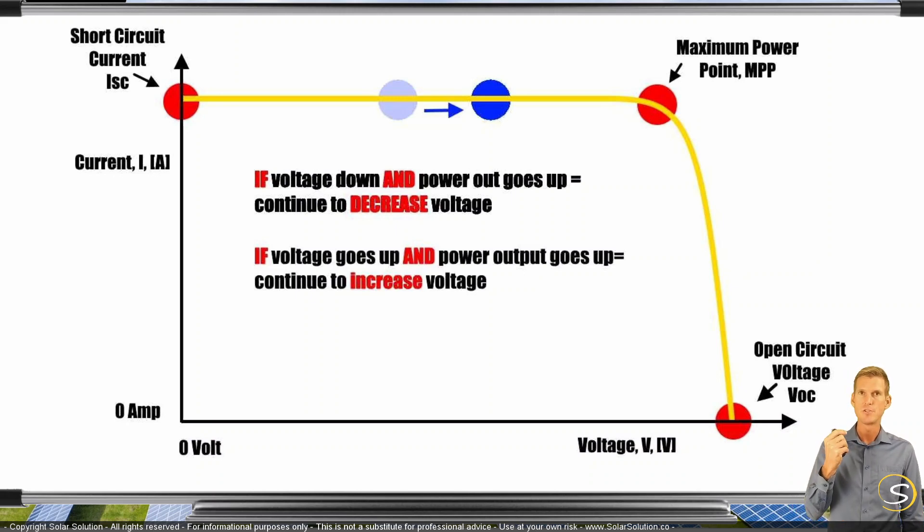Because it tries to achieve the maximum power output, which is the result of voltage times the amperage, by continuously adjusting the voltage. And it will try to hover. It's never stationary. It will try to hover around that maximum power point. And since it's hovering around that point, it's also really flexible.